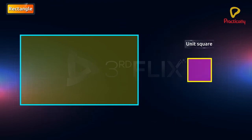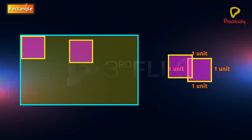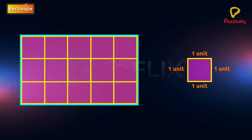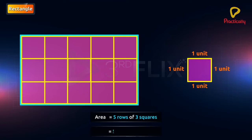A unit square is a square where each side equals to 1 unit. In this rectangle, we can fit 5 rows of 3 squares each. Area equals to 5 rows of 3 squares equals to 5 multiplied by 3 equals to 15 square units.